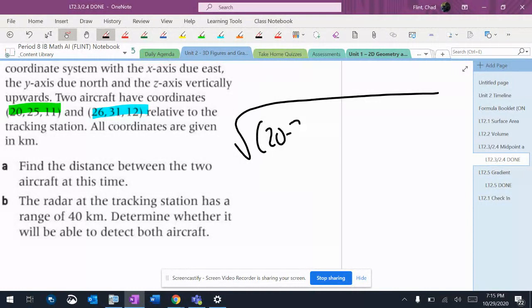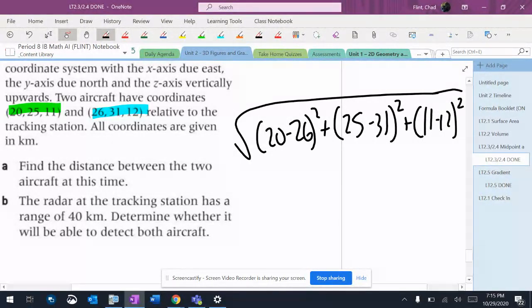It's going to be 20 minus 26 squared, and then 25 minus 31 squared, and then 11 minus 12 squared. We're going to put all that in the calculator and see how far apart they are.